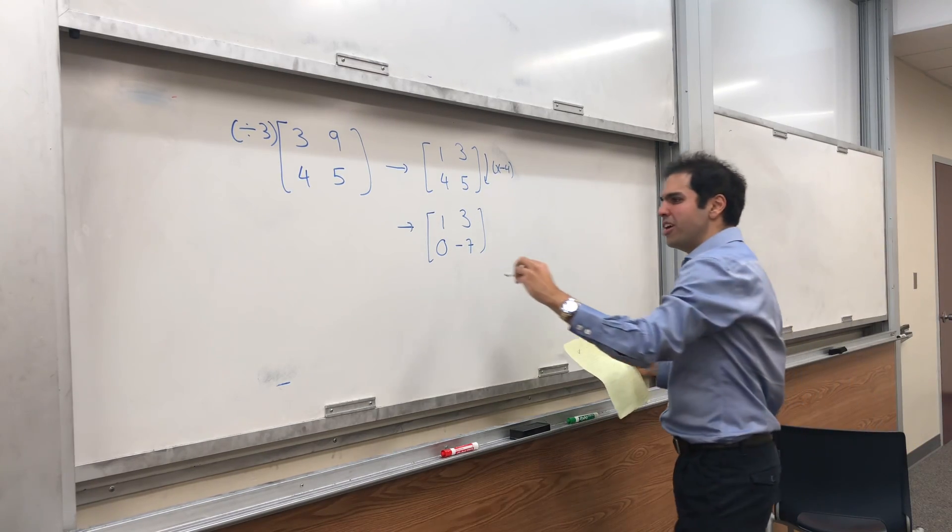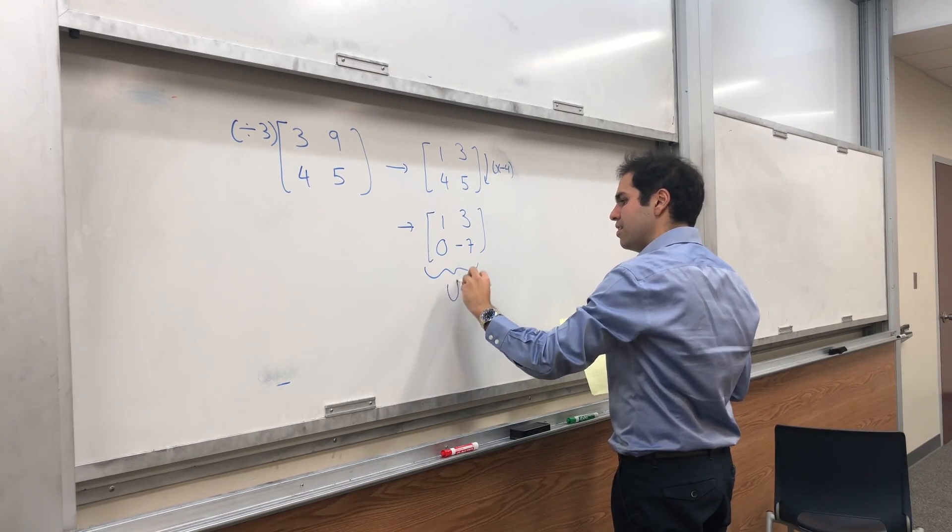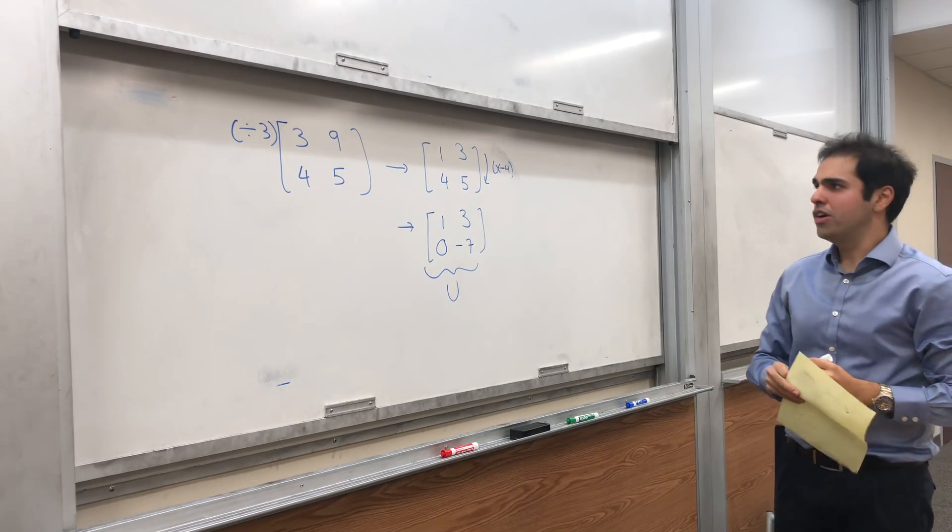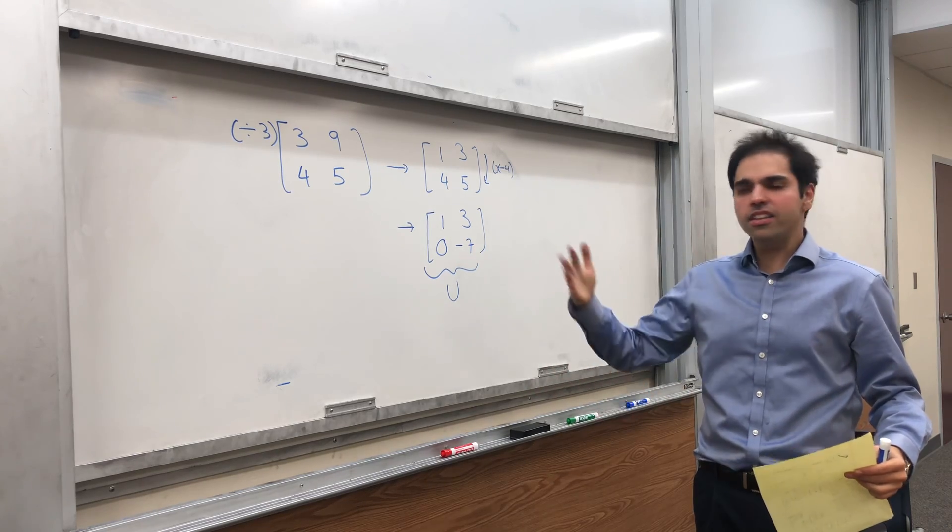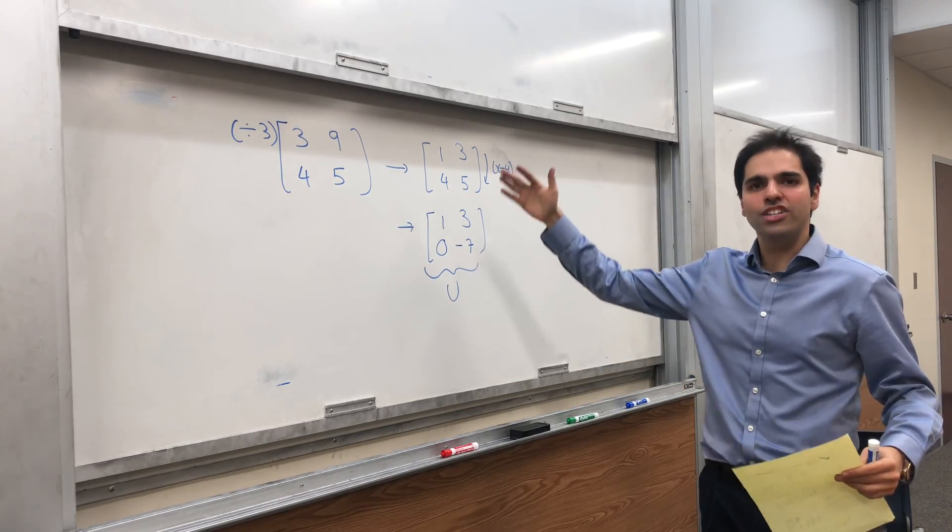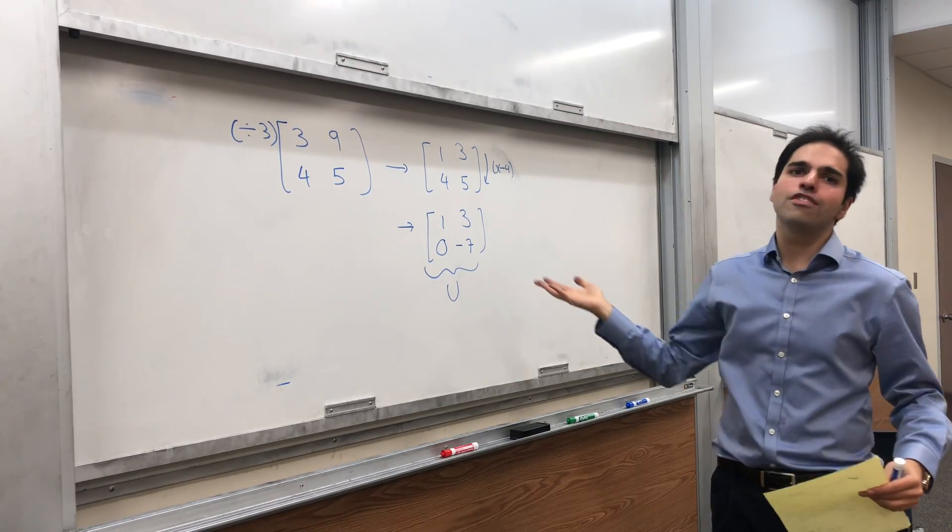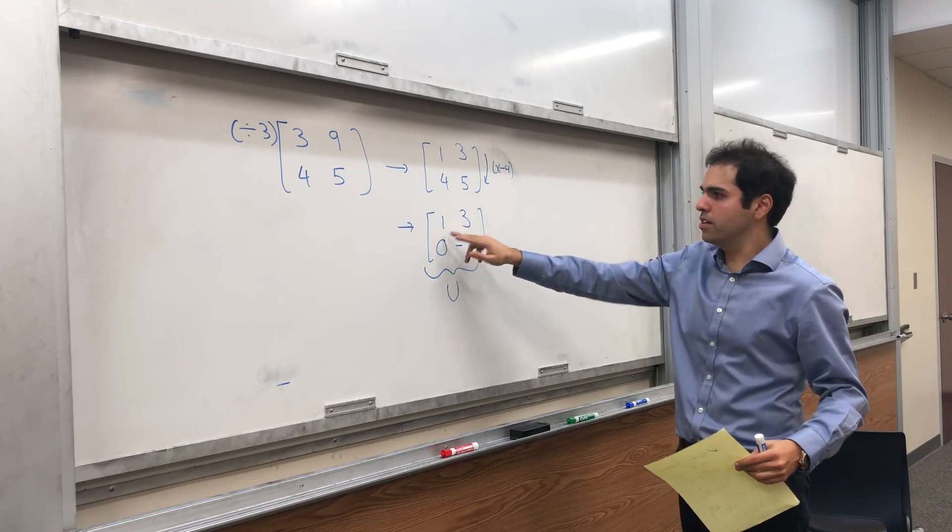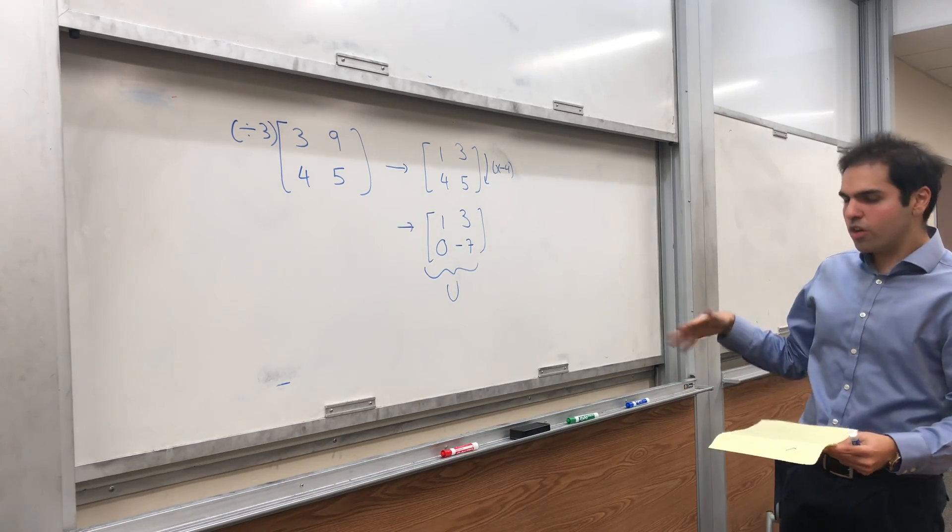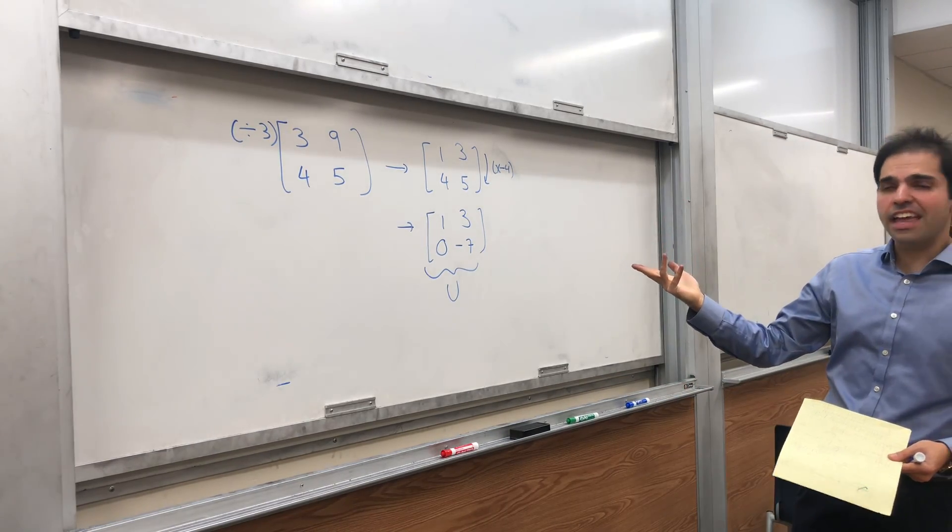And this will be our U, because it's upper triangular. And of course, for 3 by 3 matrices, you just repeat the steps until you basically get the row echelon form, which is sort of an upper triangular matrix. So here we know we're done, because it does look upper triangular. And then the question is, how would we get L?